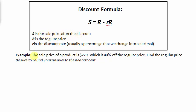In this example, the sale price of a product is $220, which is 40% off the regular price. Find the regular price. Be sure to round your answer to the nearest cent.